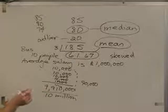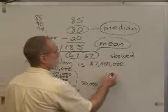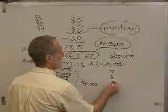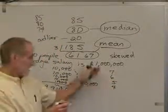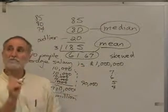If you have an even number of numbers, let's say we had 7, 6, 5, and 4, and we said what's the mean? Add and divide by 4. What's the median?